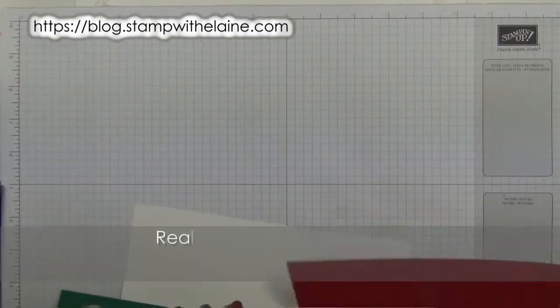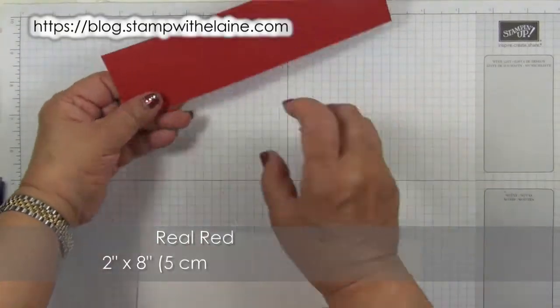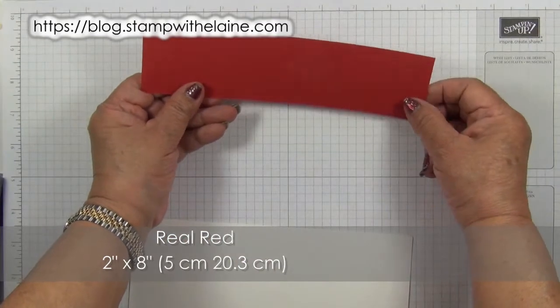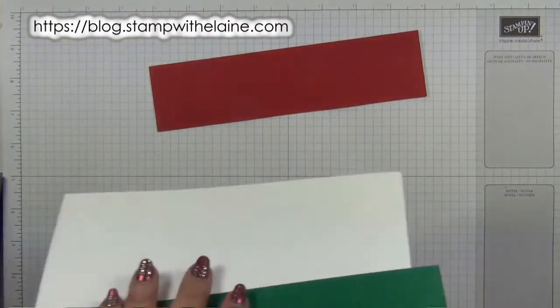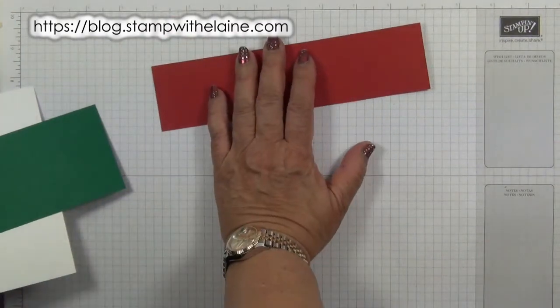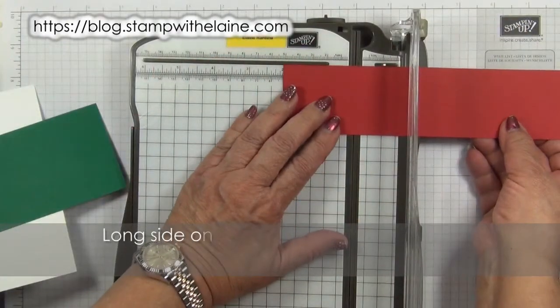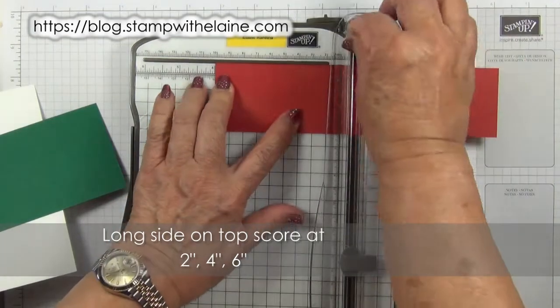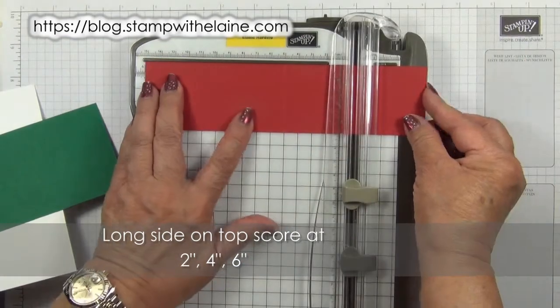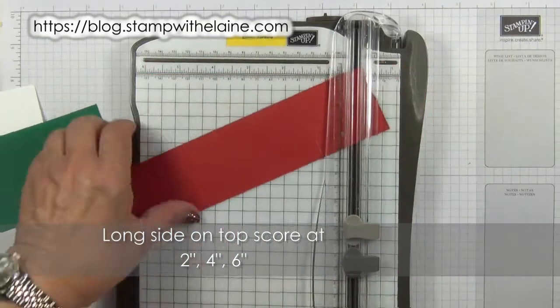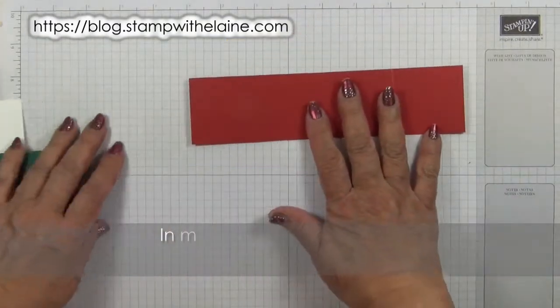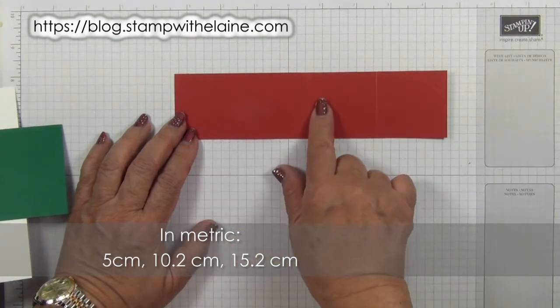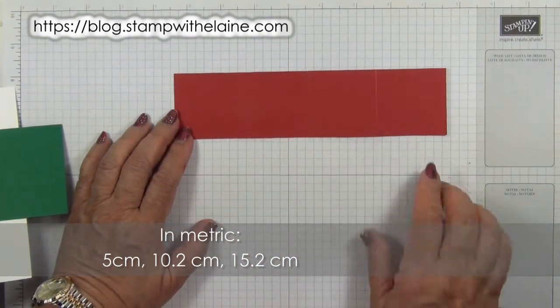The cardstock you need is Real Red, two inches by eight inches, and you need to score that at two inches, four inches, and six inches. In metric that will be five centimeters, ten point two centimeters, and fifteen point two centimeters.